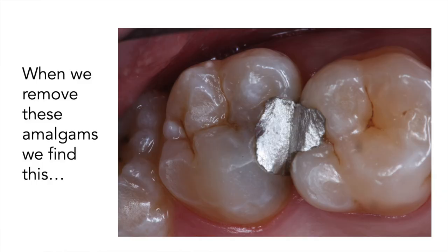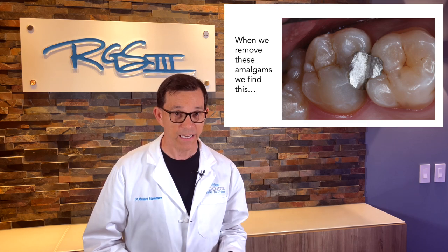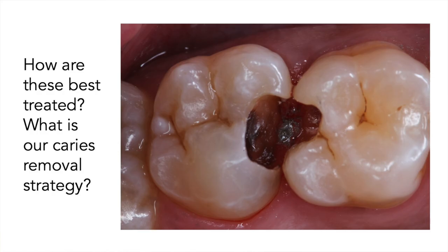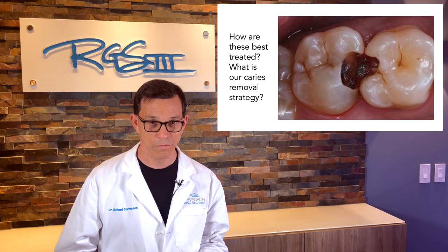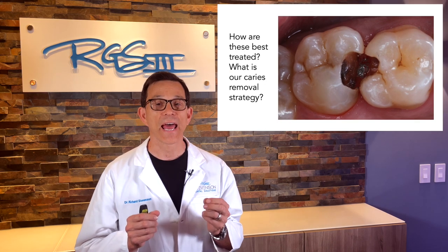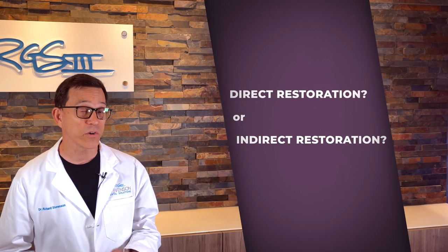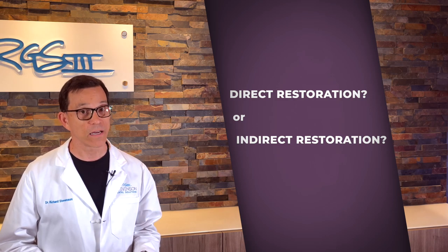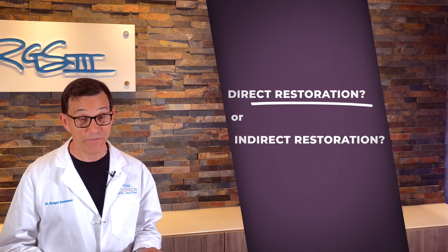When we take a look at these amalgam restorations which were not done very well — in fact, the clinician had connected the amalgams together, keeping the patient from being able to floss between the teeth — this is remarkably problematic dentistry. When we remove these amalgams, we can see significant issues underneath. So how do we remove the decay and restore these teeth? Today we're going to talk about direct restorations, specifically composites.